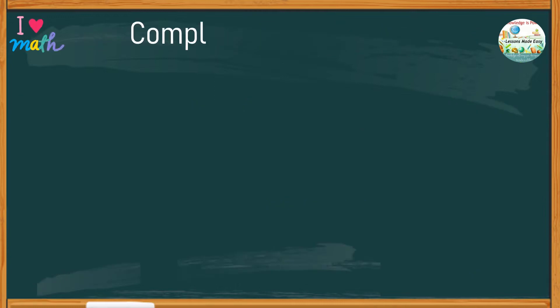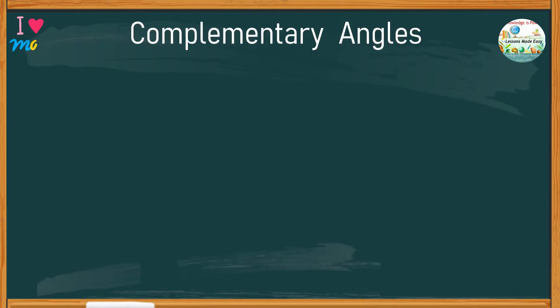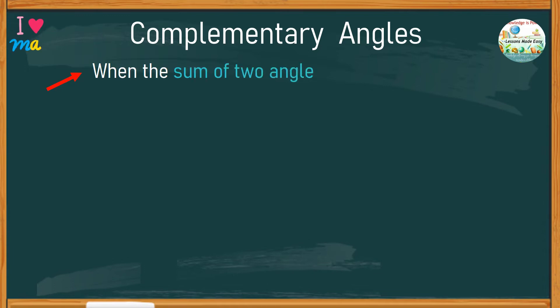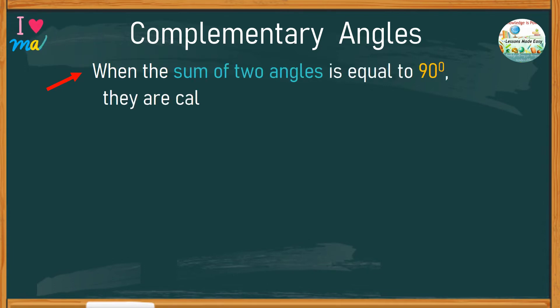What do you know about complementary angles? Let's review. When the sum of two angles is equal to 90 degrees, they are called complementary angles.